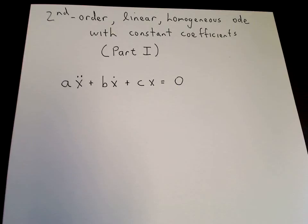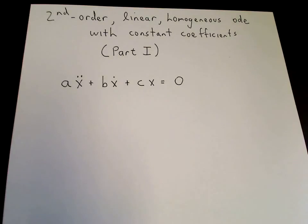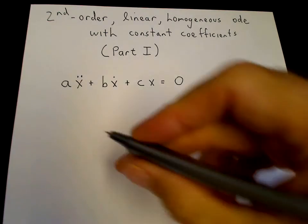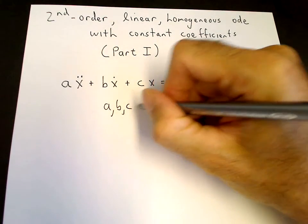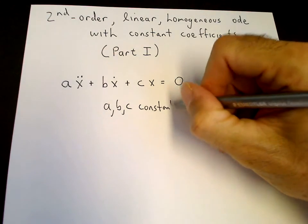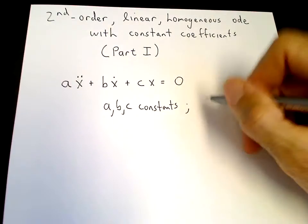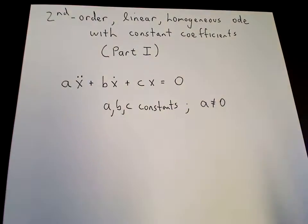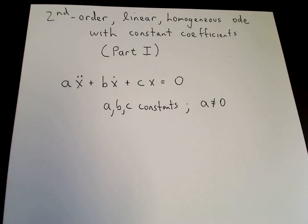The general equation has x as a function of time, x-dot is dx/dt, and x-double-dot is d²x/dt². The general equation is: a·x-double-dot plus b·x-dot plus c·x equals zero, where a, b, and c are constants. Because we want this to be a second order equation, a is not equal to zero — it can be positive or negative. b and c can be zero, but a should not equal zero.